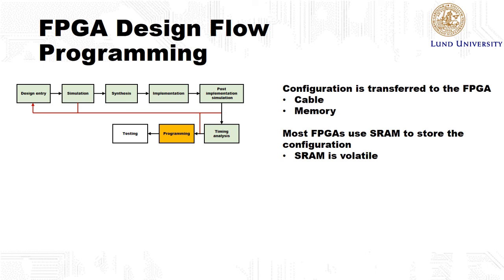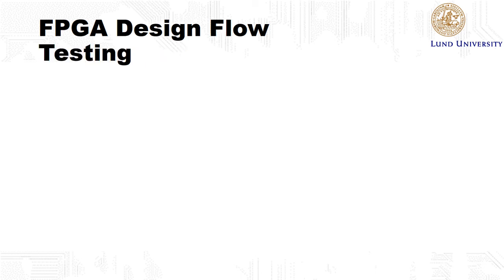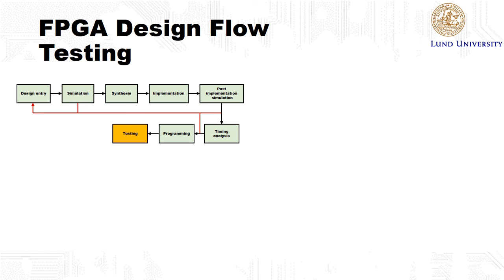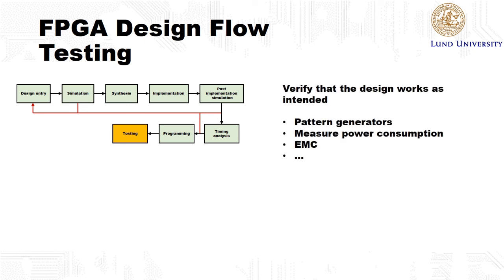For SRAM-based FPGAs, the configuration must be reloaded after a power cycle. This is typically accomplished by placing a memory on the same circuit board as the FPGA, where the configuration is stored in external memory, and when the system is powered on, the configuration is transferred to the FPGA. The benefit of flash-based FPGAs is faster system startup, as the configuration is already in place. The benefit of SRAM-based FPGAs is denser memory, meaning more memory can fit in the same space. Once the design has been transferred to the FPGA, the system is tested and functionality verified with different instruments like pattern generators.